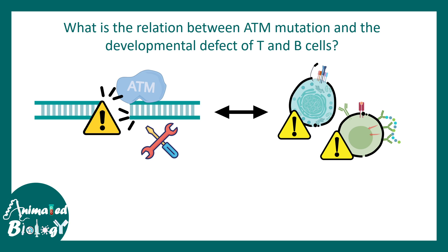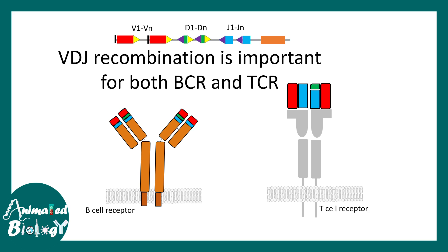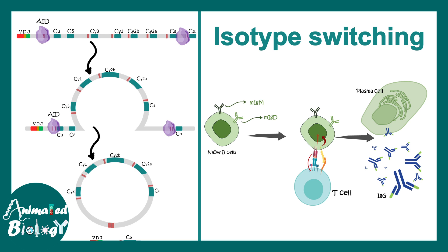But what is the functional relation between ATM mutation and developmental defects in T or B cells? While B cells and T cells are maturing, their receptors — the B cell receptor and the T cell receptor — need to undergo VDJ recombination. VDJ recombination is very important for both T cells and B cells, and this is a recombination process which requires double-stranded DNA breaks and also repair machinery. If you want to learn more about VDJ recombination, there is a linked video. Also for B cell maturation there is another important step, which is isotype switching.